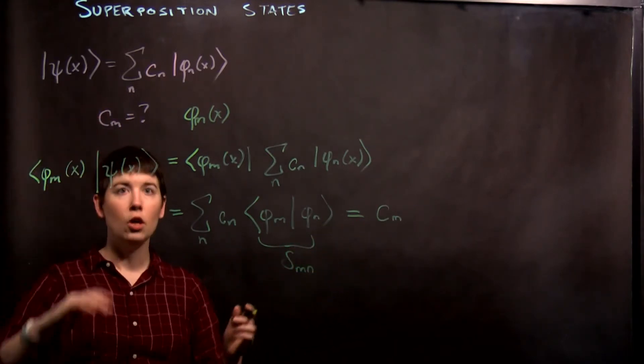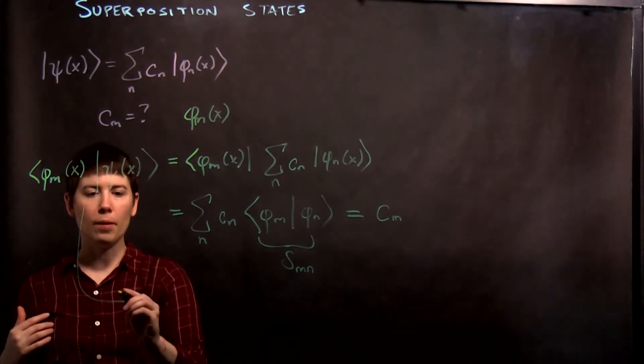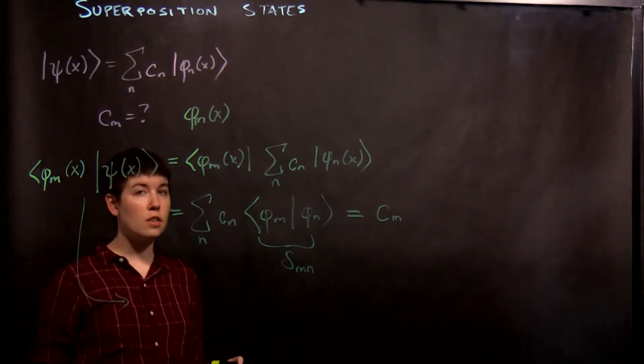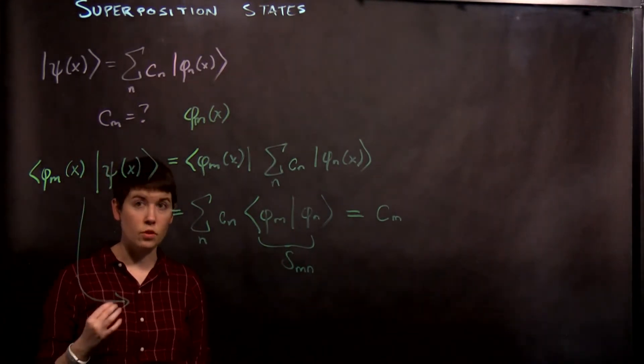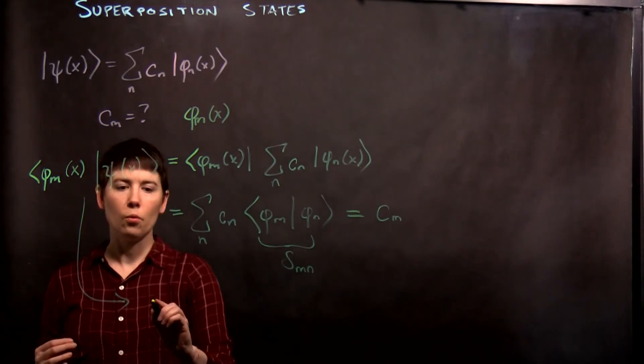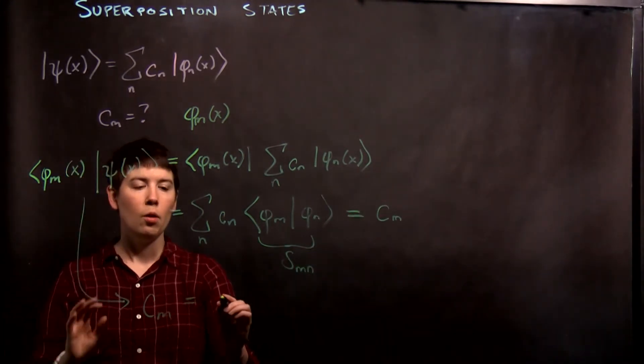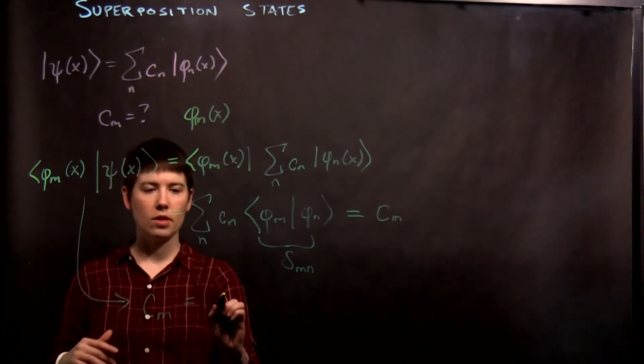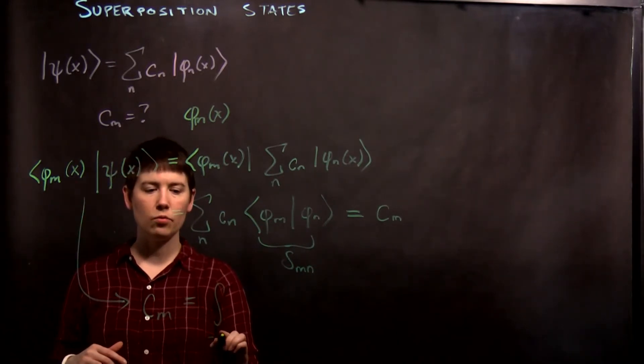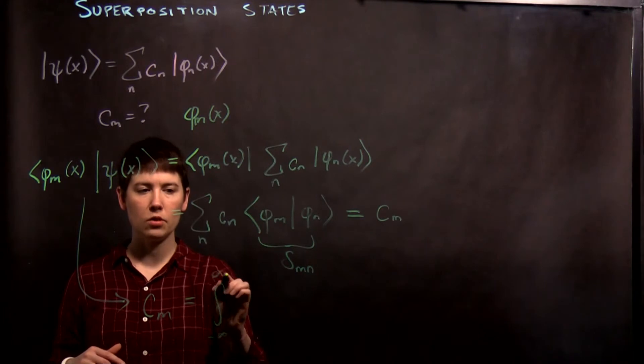And that's what we were trying to find. So now what we do is remember that now that we're working in the position space, there's a different way to write this. So c m is equal to this inner product. But now, how we need to write this,